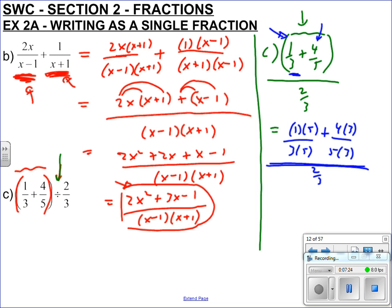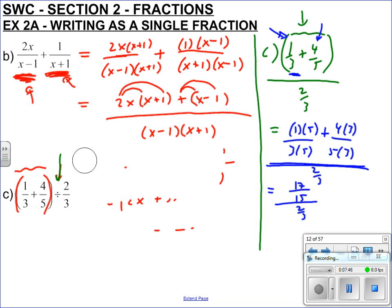It's still over 2/3. Now I can put the top together: 1 times 5 is 5, plus 4 times 3 is 12, so that's 17. 3 times 5 on the bottom is 15, over 2/3.